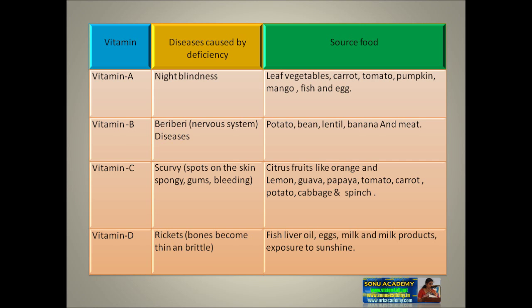Vitamin C deficiency causes scurvy — symptoms include spots on the skin, spongy gums, and bleeding. To reduce this deficiency, we should eat citrus fruits like orange, lemon, guava, papaya, tomato, carrot, potato, cabbage, spinach, etc.